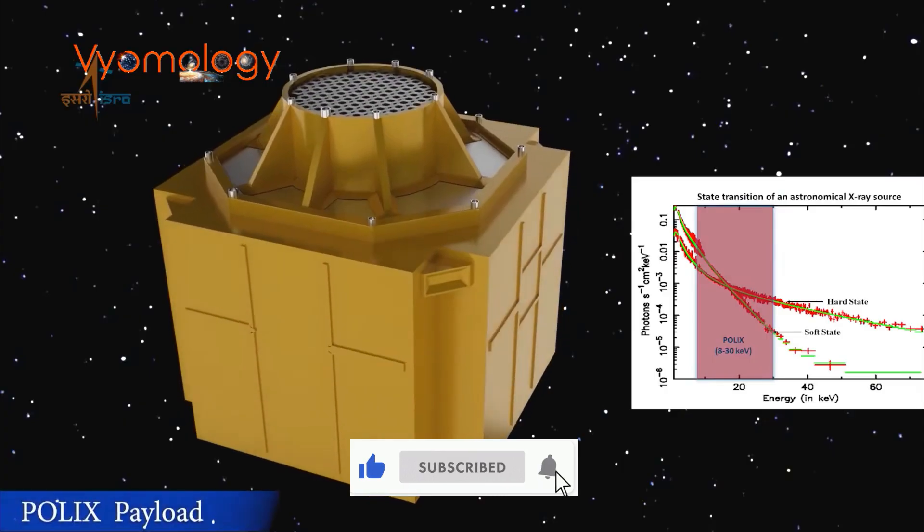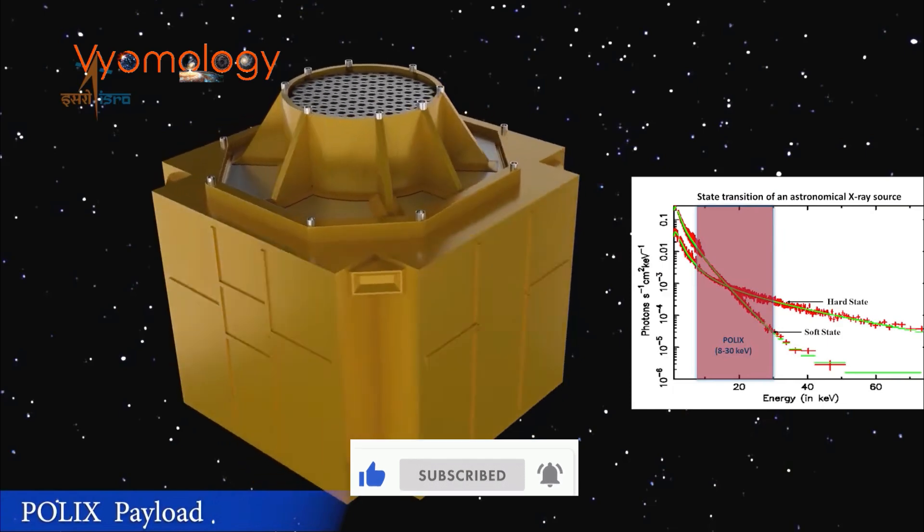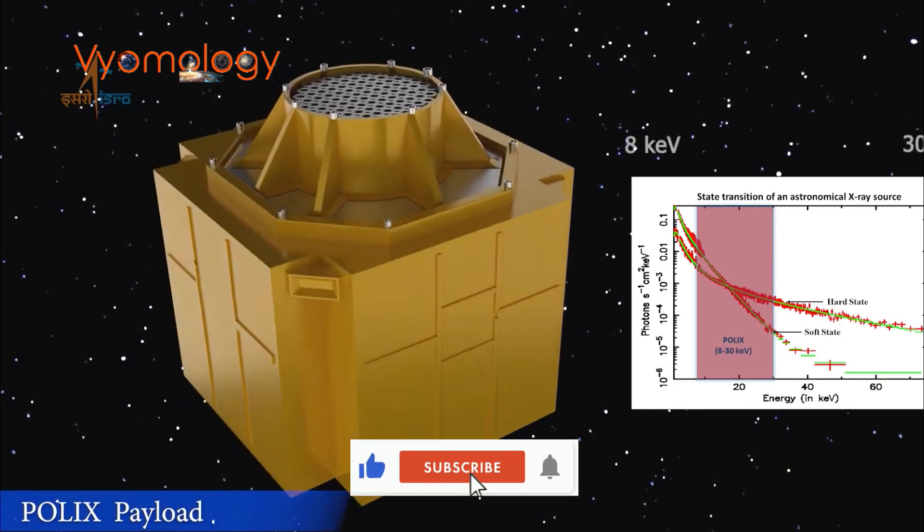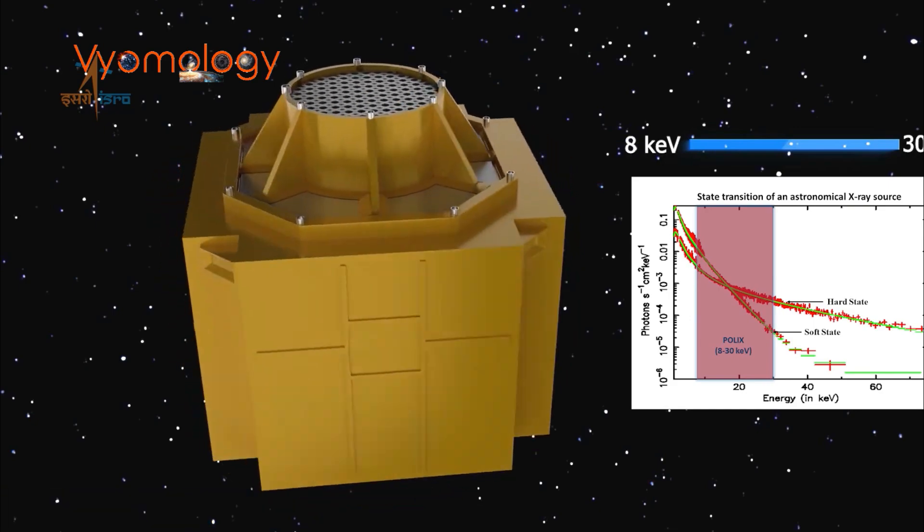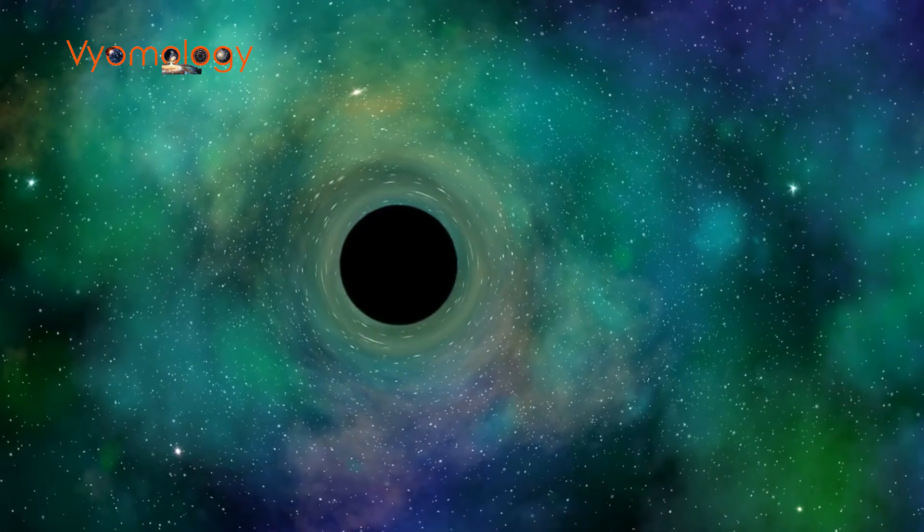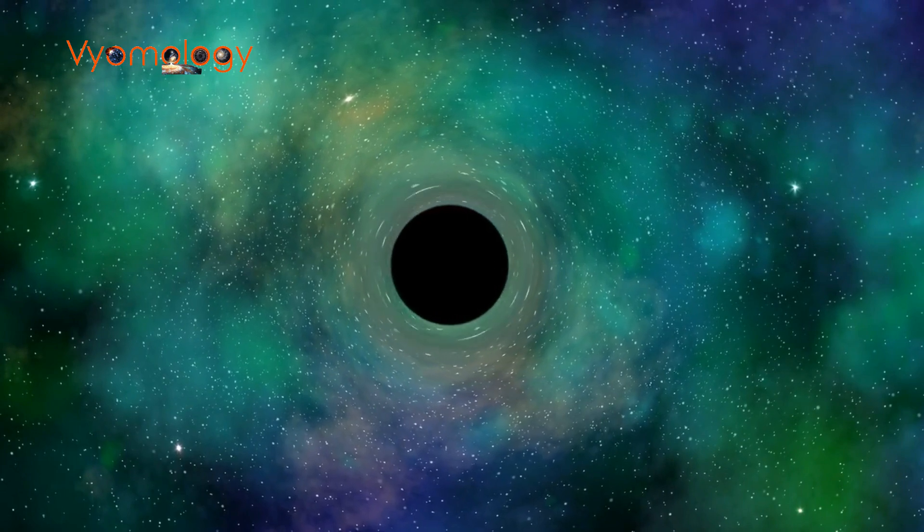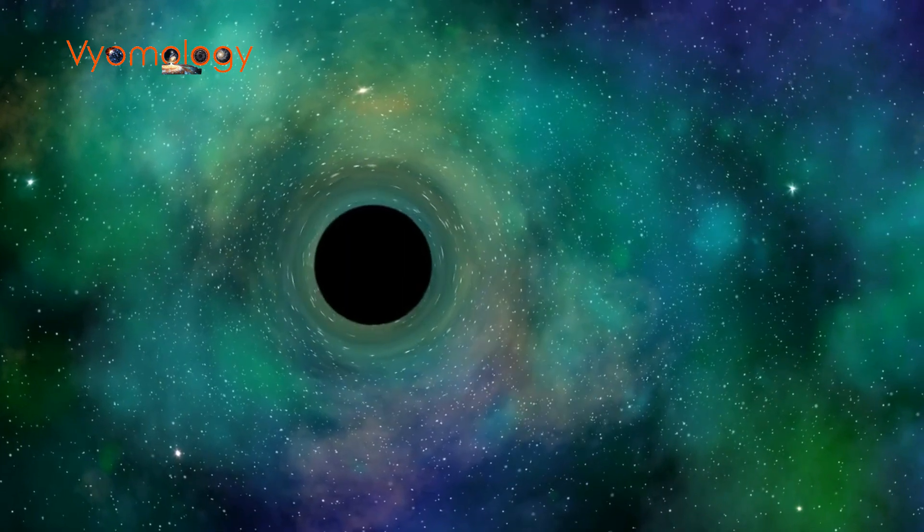ExpoSat is a polarimeter, meaning it measures the light polarization, a fancy way of saying it reveals the hidden secrets of light, like its alignment and direction. This is crucial for studying black holes, as their immense gravity twists and distorts light in incredible ways.